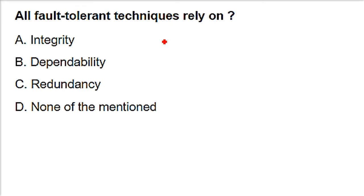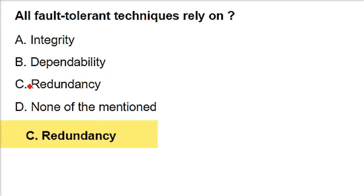All fault-tolerant techniques rely on redundancy. Fault tolerance means the system can tolerate faults - it will not fail catastrophically. In hardware terms especially, redundancy is the key technique used to achieve fault tolerance. For software, fault tolerance means either it doesn't fail, or it fails gracefully.